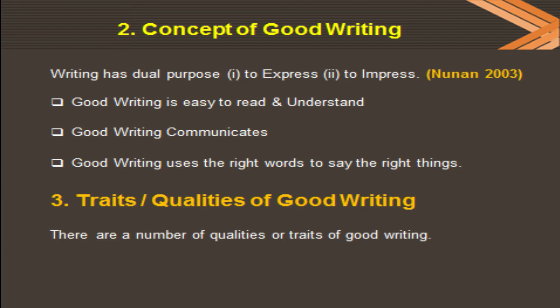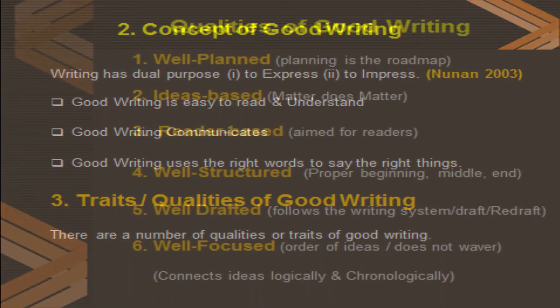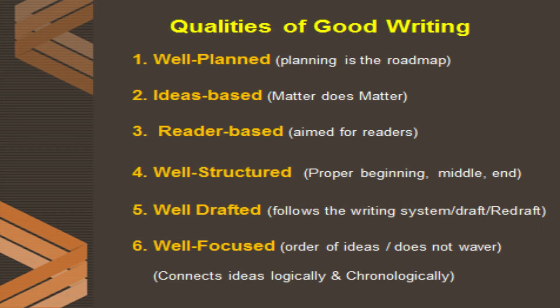Now let's study the traits or qualities of good writing one by one. Number one: good writing is well planned. Planning is the road map — every writer starts from thinking, and thinking is planning. A good plan naturally ends with a good product. If writing is not well planned, it cannot be good writing, because there are going to be issues with that text.